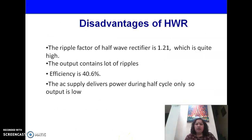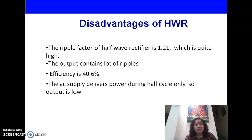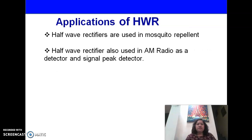The half-wave rectifier has a number of disadvantages. The ripple factor is 1.21 — a lot of ripple is present in the rectifier output. Efficiency is just 40.6%, as it conducts current for only one cycle and for the other cycle there is no output — the rectifier is in sleep mode. As for applications, the half-wave rectifier can be used in mosquito repellents, AM radios as a detector, and as a signal peak detector.